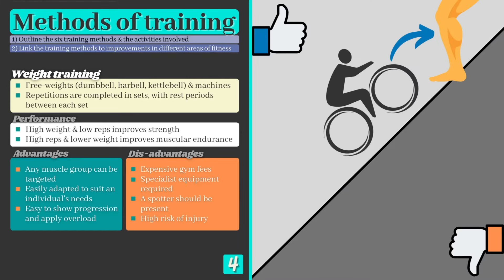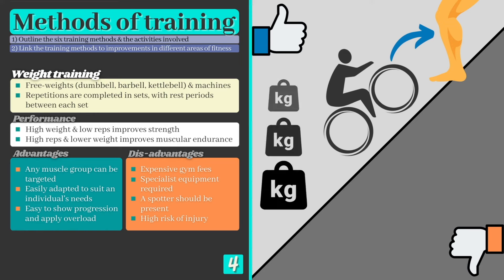Advantages: Specificity can easily be applied as athletes can adapt their sessions to focus on the components of fitness and muscle groups required by their sport. It's also very easy to show progression as the weight you're capable of lifting for a given exercise increases over time and is very easy to monitor.